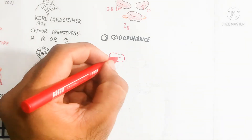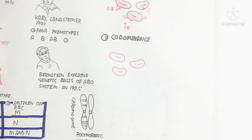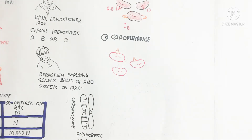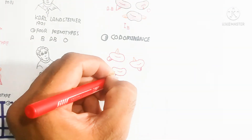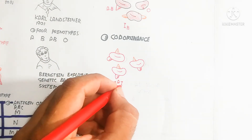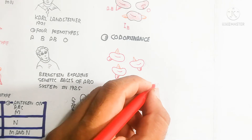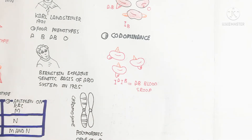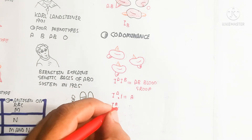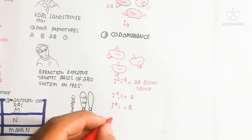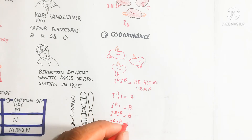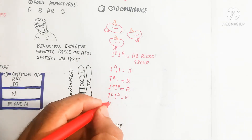This is codominance — meaning 100% production of both A antigen and B antigen. So I^A and I^B together equal AB blood group. I^A with small i equals blood group A. For example, a gene lacking antigen — small i — in a heterozygous condition with I^A produces A antigen.